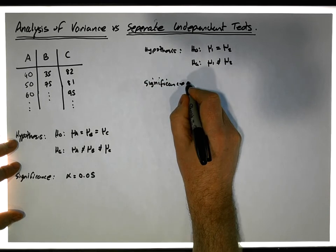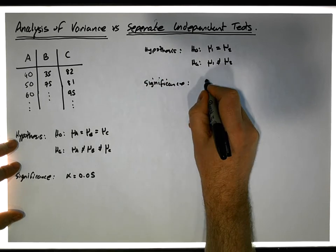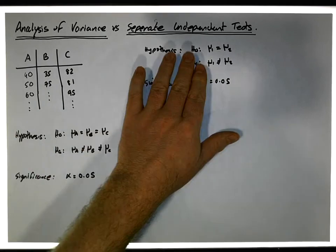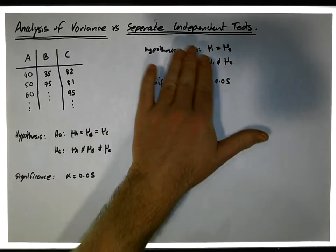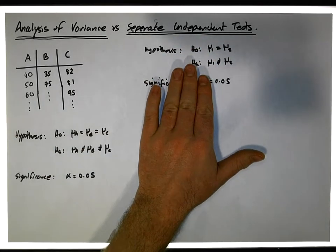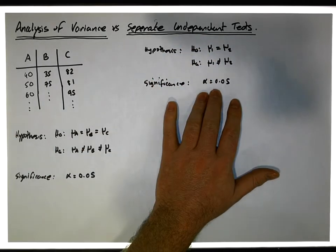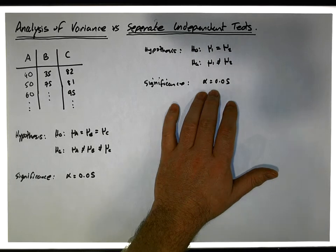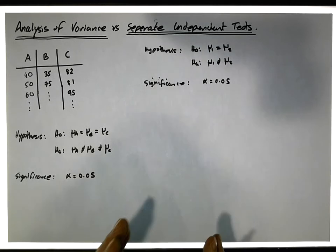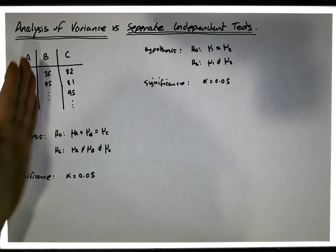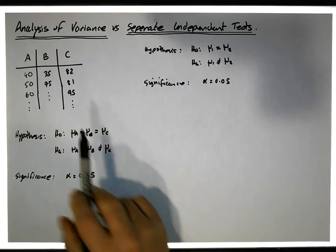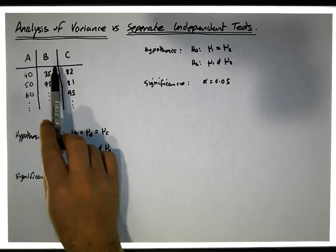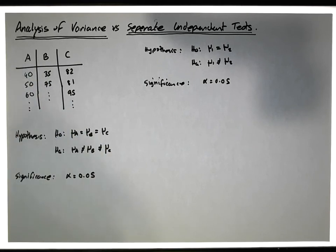Let's say alpha is equal to 0.05. So we know that when we do an independent samples t-test, the probability of committing a type one error is also five percent. The question now is: why don't we just do all the possible independent samples t-tests across these particular groups?